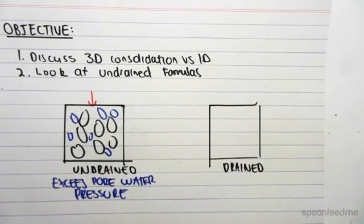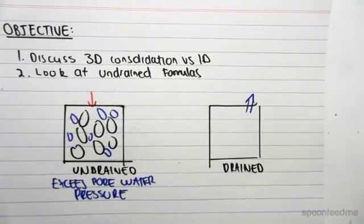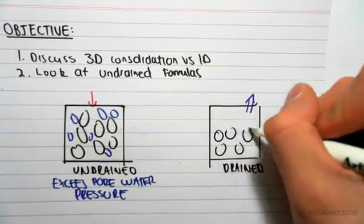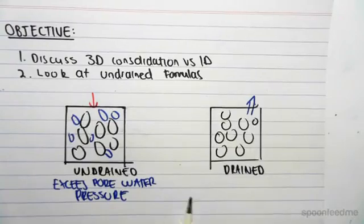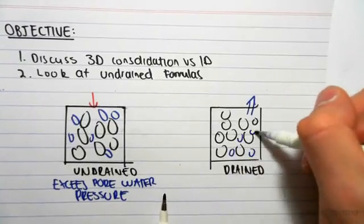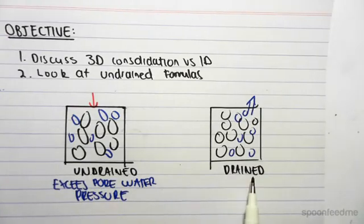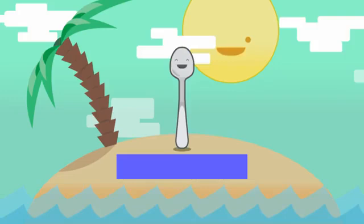If it's drained, that means the pore water pressures are free to escape. There might be a gap in the soil, a gap in our sample, which allows the excess pore water pressures to escape. We still have pore water pressure, but we no longer have excess pore water pressure, so we say that this sample is drained. In this video, we're just going to be looking at the undrained sample.